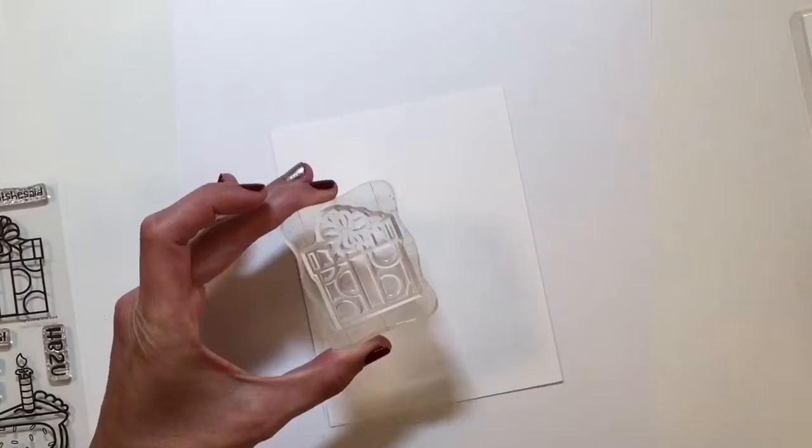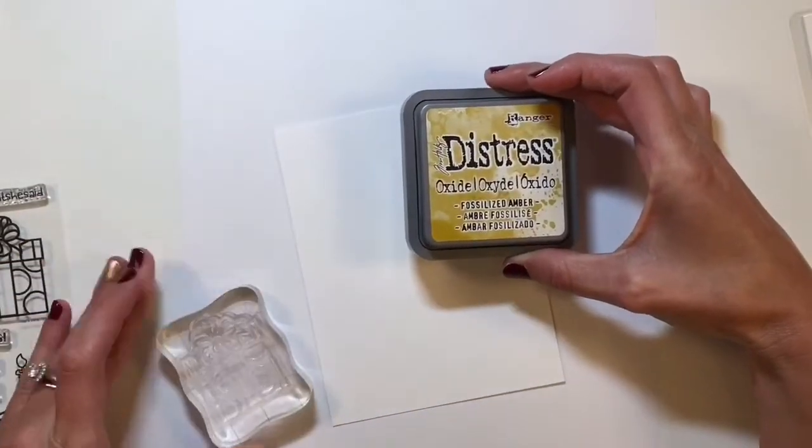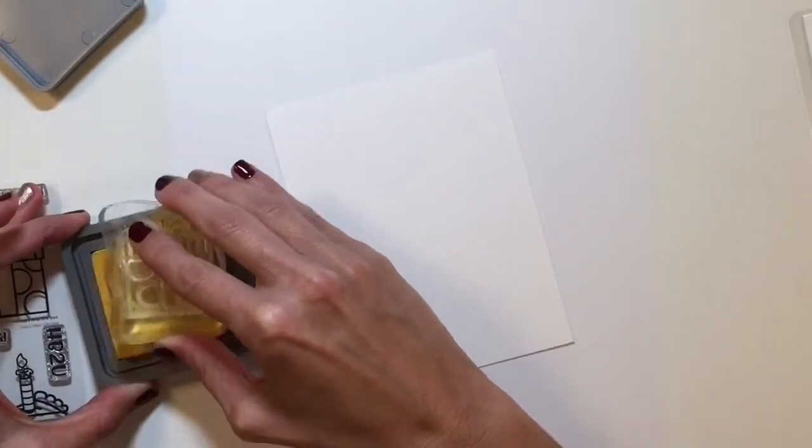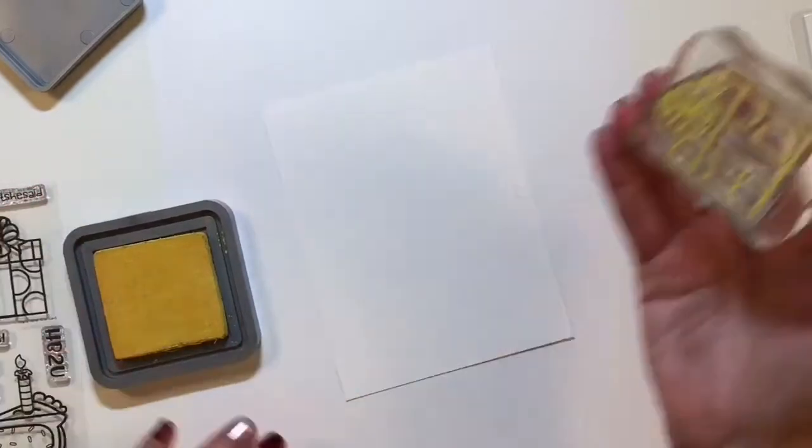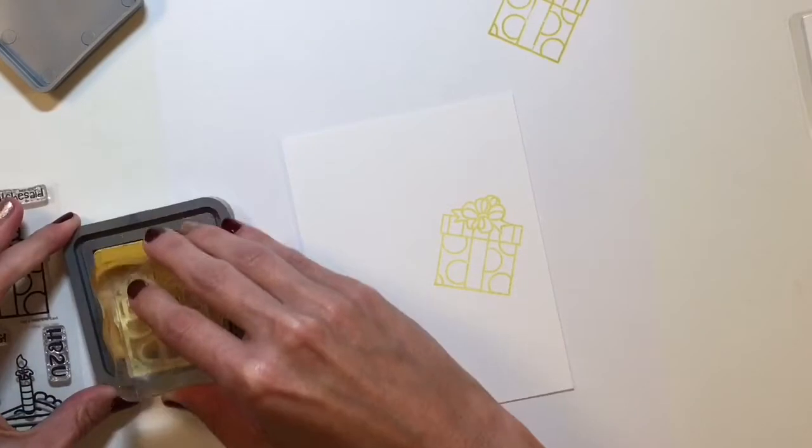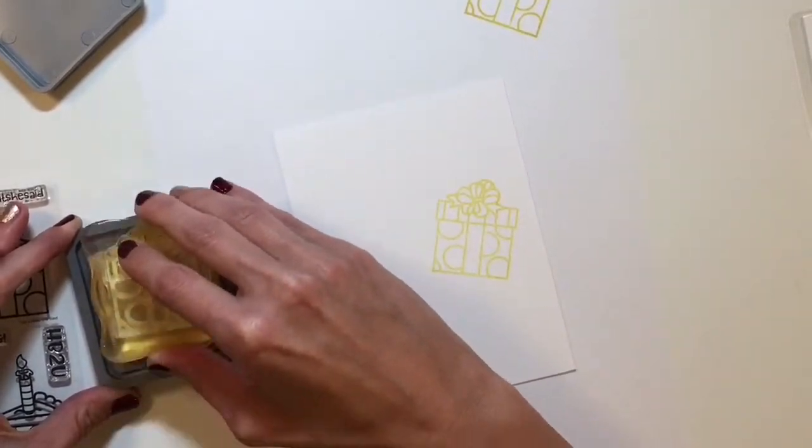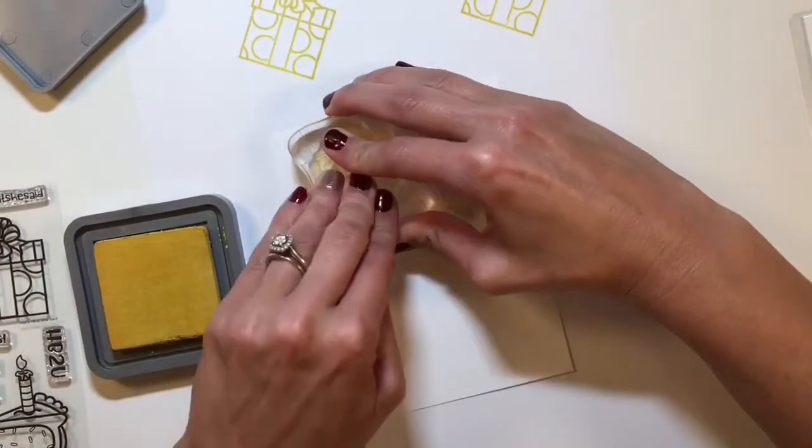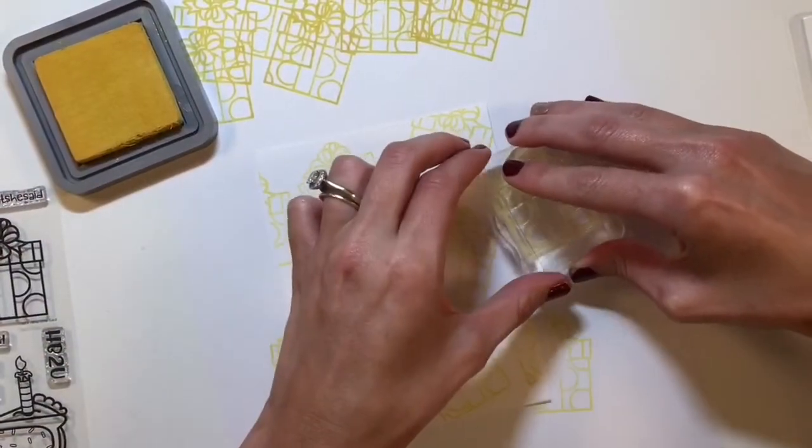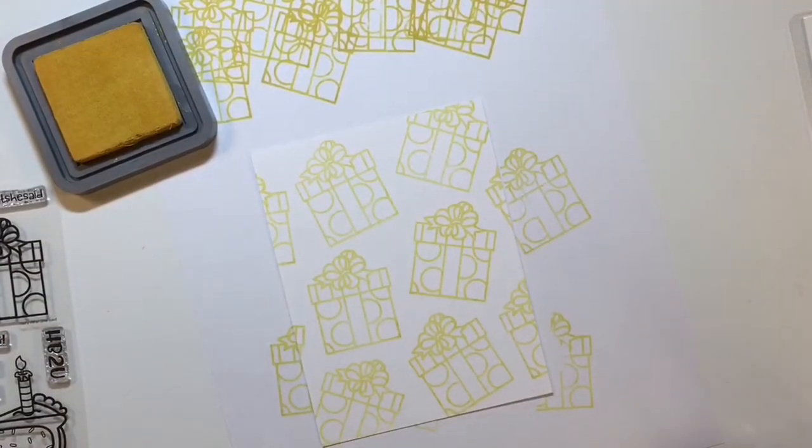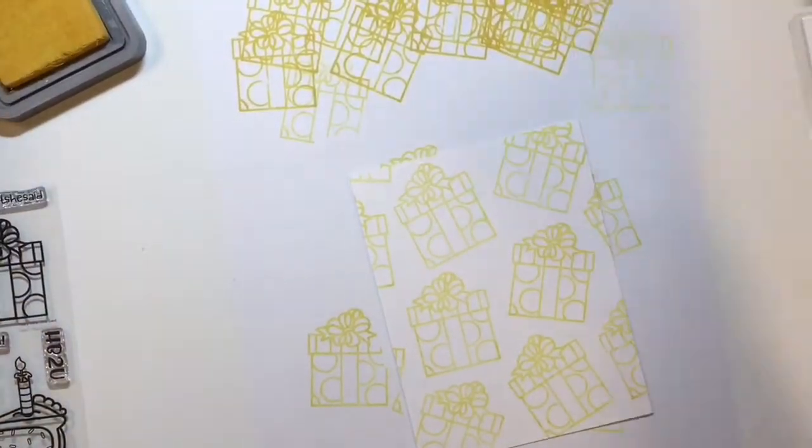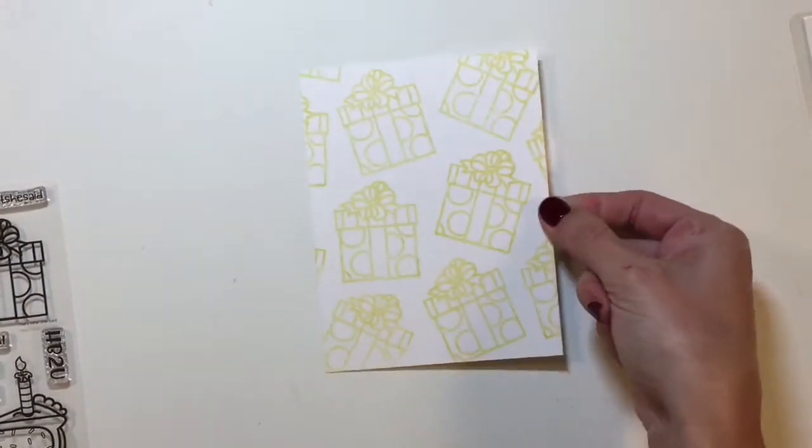We're going to start our card project by stamping the present from the What She Said stamp set. This is a new release from SweetStampShop this month of October. I'm going to use this fossilized amber distress oxide and do a second generation stamping. So that means I stamp off the first bit on some scratch paper, and then I stamp it the second generation onto the cardstock. What that does is gives me a lighter color so that I can create a background, but the background won't overtake the card.